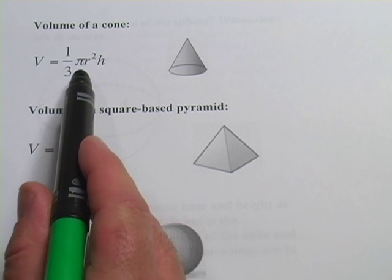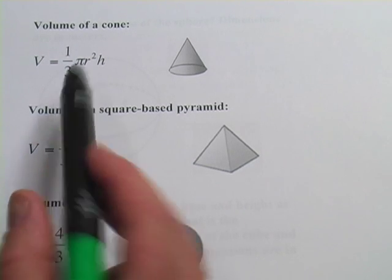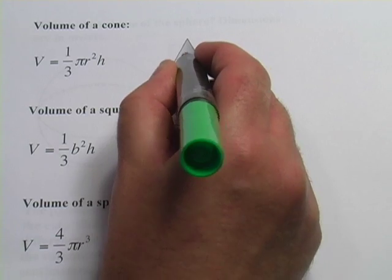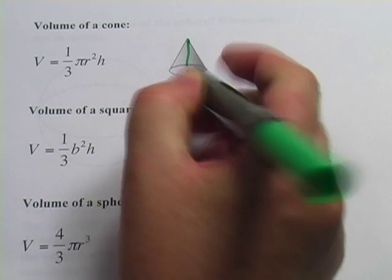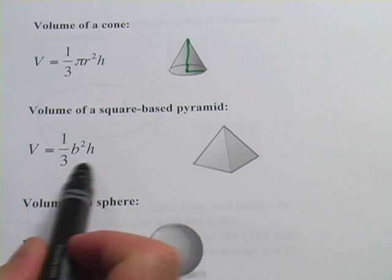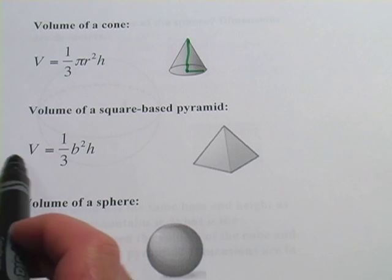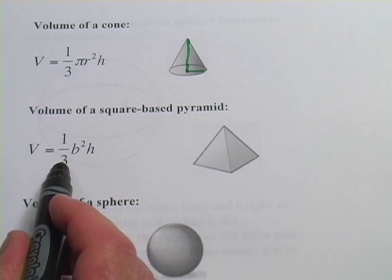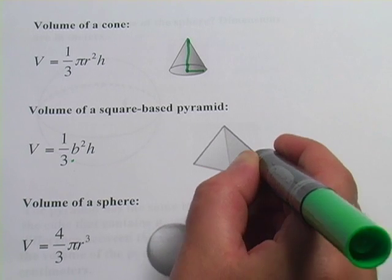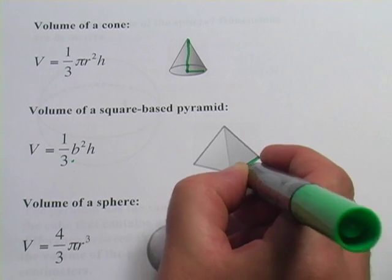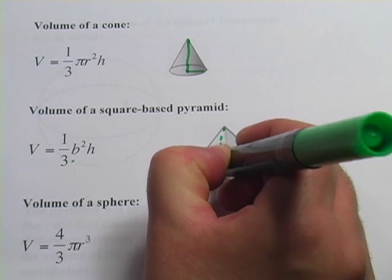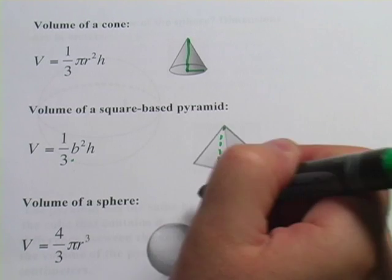The volume of a cone is one-third pi r squared h, where r squared is the radius of the circle on the bottom, and h is the height of the cone from the bottom to the tip. The volume of a pyramid looks pretty similar — it's one-third times the base squared, and this is a square pyramid, so one side of that would be the base. The height would again be from the tip to the bottom, down into the middle, not down the side.